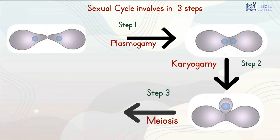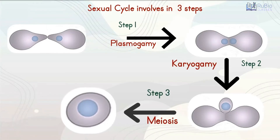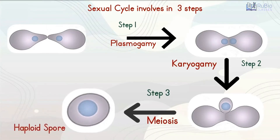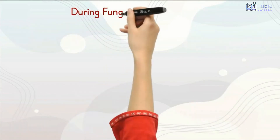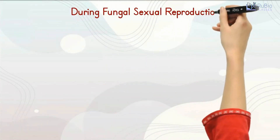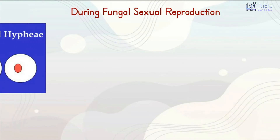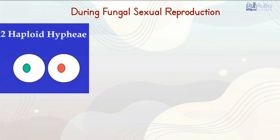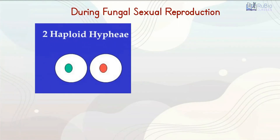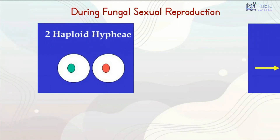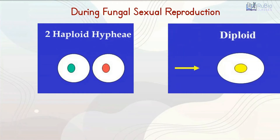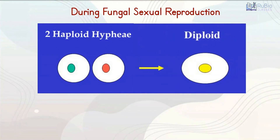During fungal sexual reproduction, two haploid hyphae of compatible mating types come together and fuse, resulting in diploid cells.